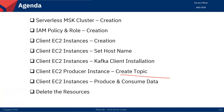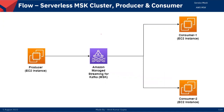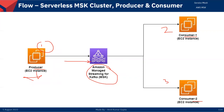We will create the serverless MSK cluster, create an IAM policy and role, and create EC2 instances — one for the producer and two for the consumers. We will set the hostname, install the Kafka client, and create a topic. After that we will start the producer and consumer, and check how it works.